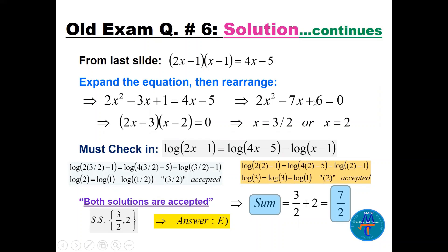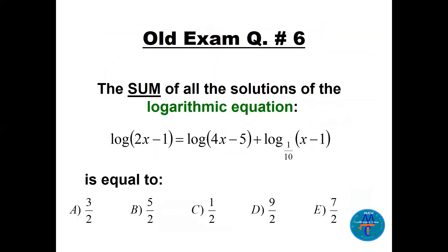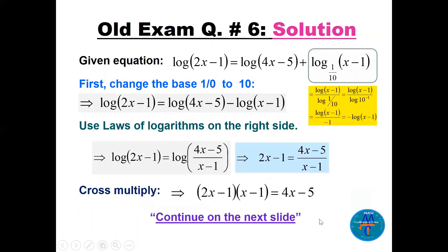Using the one-to-one property, 2x−1 equals (4x−5)/(x−1). Cross-multiplying and expanding via FOIL: (2x−1)(x−1) equals 4x−5, giving 2x² − 7x + 6 equals 0. Factoring: (2x−3)(x−2) equals 0, so x equals 3/2 or x equals 2. Checking both in the original equation, all arguments are positive, so both are accepted. The sum is 3/2 plus 2 equals 7/2. The answer is E.